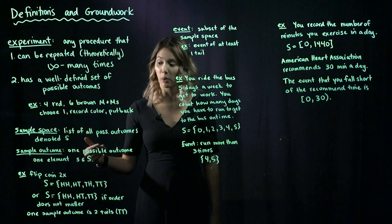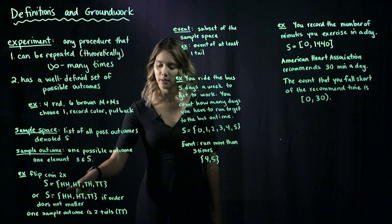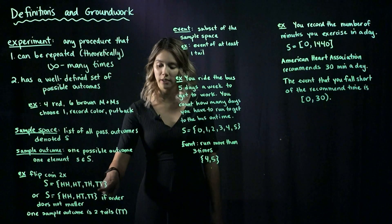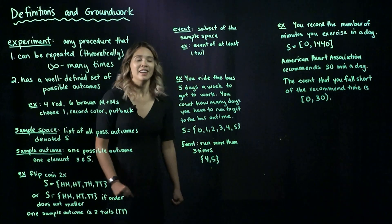And then if we want to look at just one of these possible outcomes, we would just look at one of these elements. One element could be two tails, T and T.